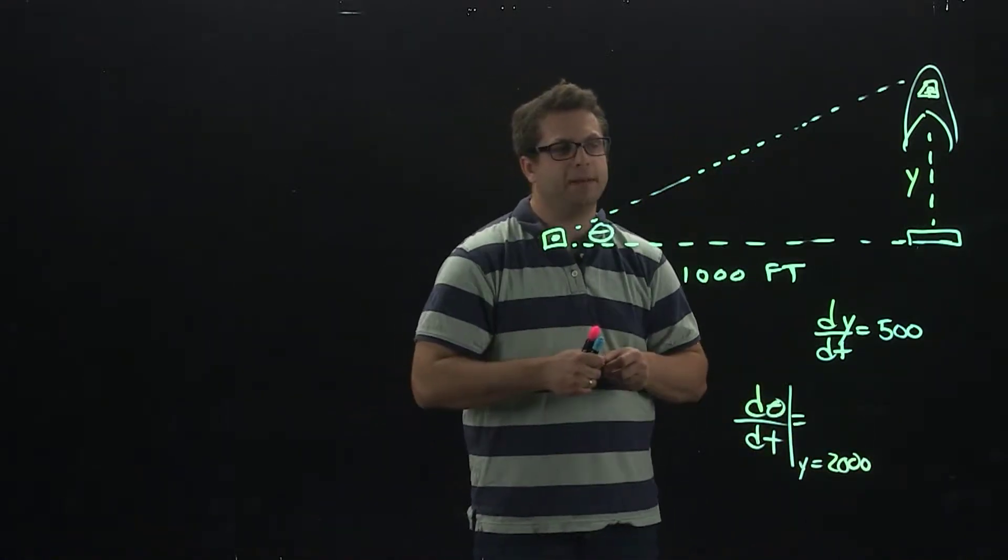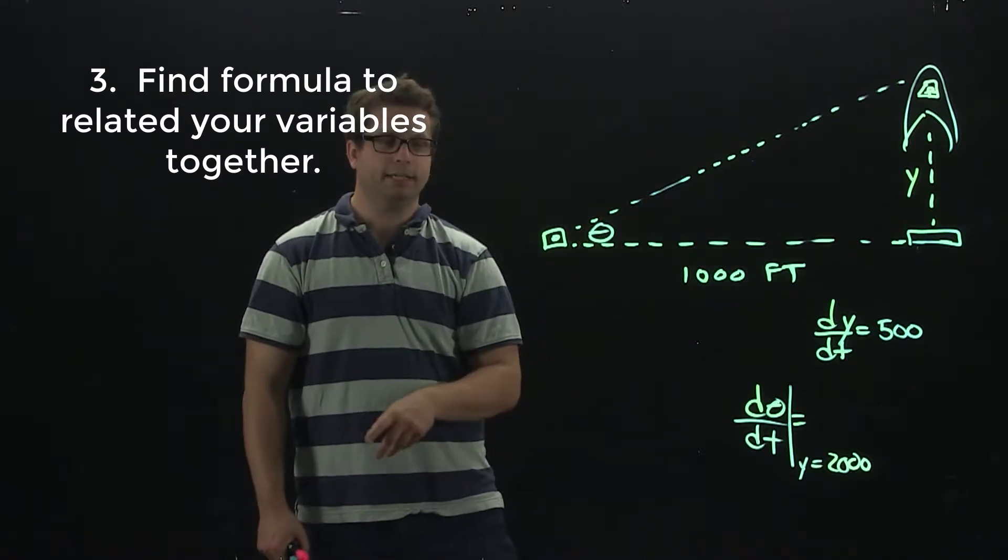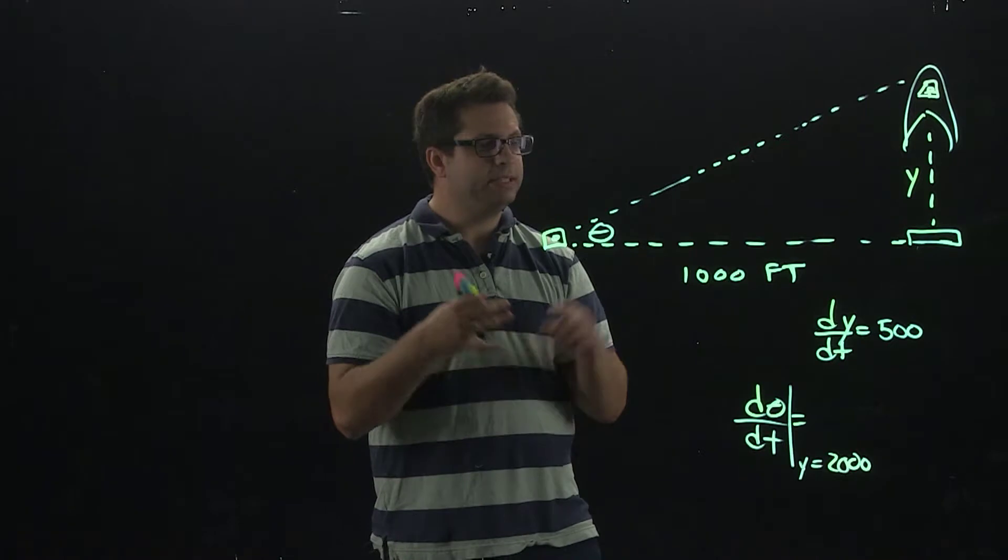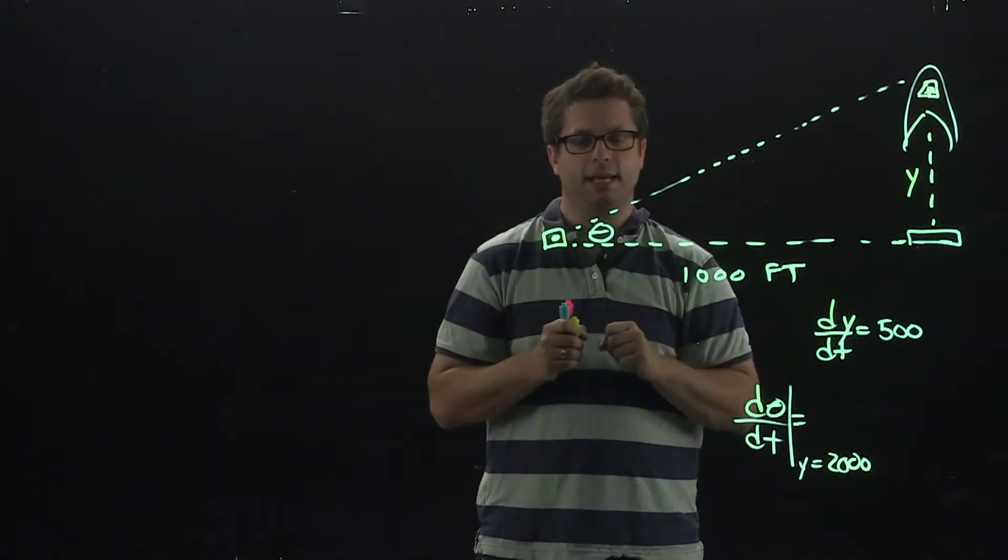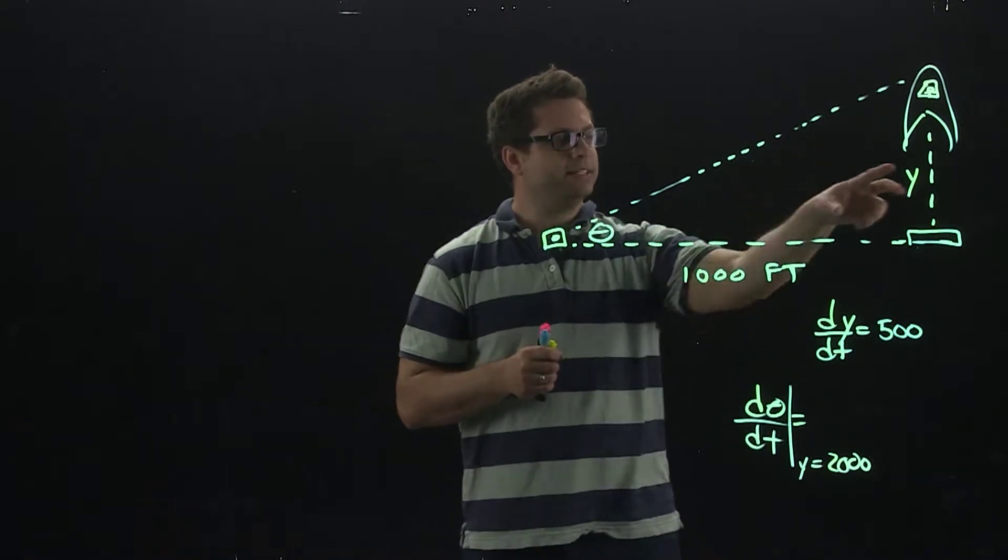Part three of our steps. How do we relate the variables y and theta together? Now, I do have a right triangle. We try Pythagorean's Theorem, but that's not going to help us because this has a theta in it. Instead, we're going to do SOHCAHTOA. We're going to relate the sides of a triangle with its angle.